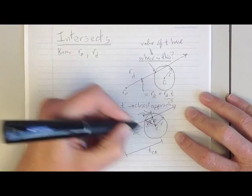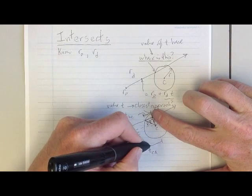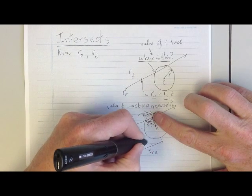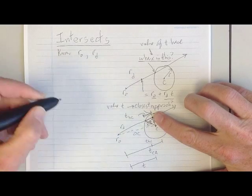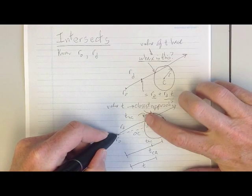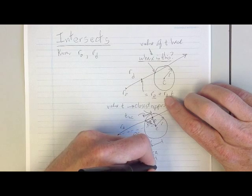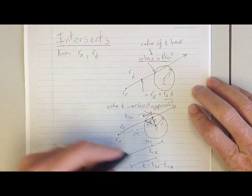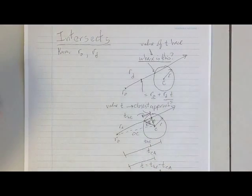This is done by remembering that there's a right triangle formed by the vector that connects the center of the sphere to the point of closest approach, which connects the point of closest approach to the intersection point, and then connects the radius to the intersection point. We know the value of the radius, but we don't know the distance between the point of closest approach and the ray itself.